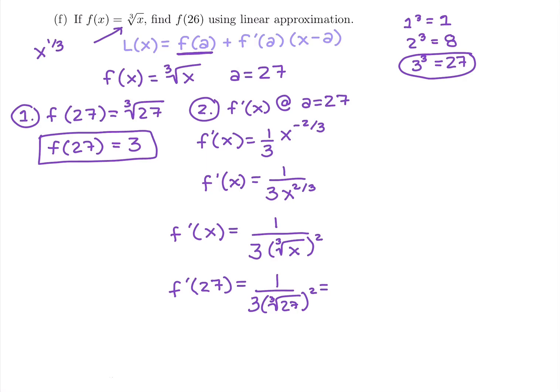So we get 1 over 3 times the third root of 27 is 3, and that's getting squared. So 1 over 3 times 9, our derivative f prime of 27 is going to be 1 over 27.